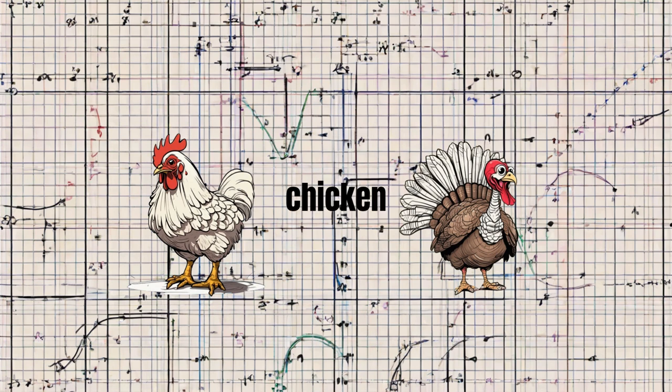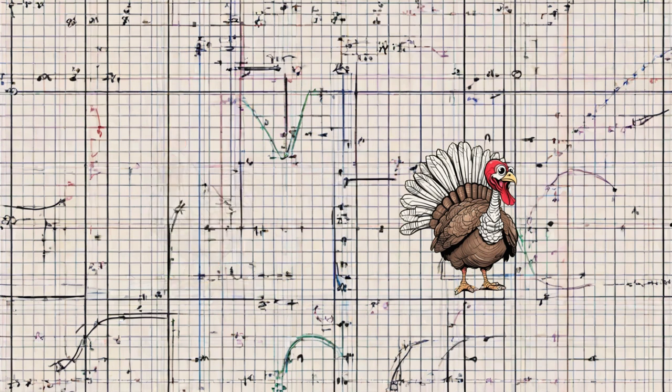So when you see a chicken and a turkey walk by, think of this equation, reach for the sky. Math's all around us and every little thing. Chicken times turkey, let your brain take wing. Chicken times turkey.